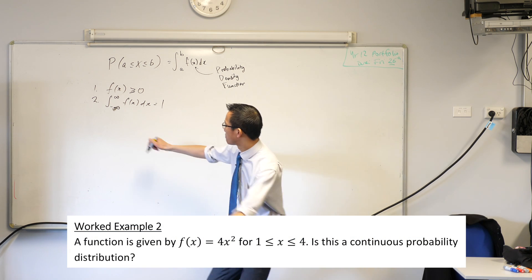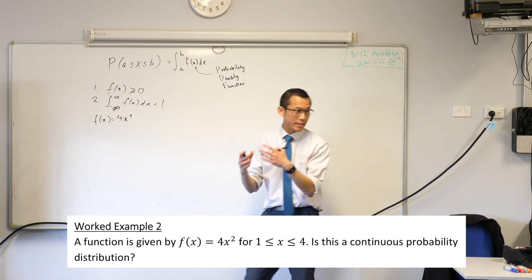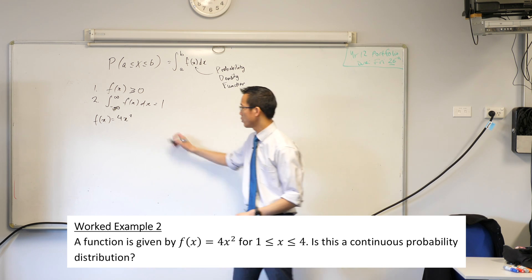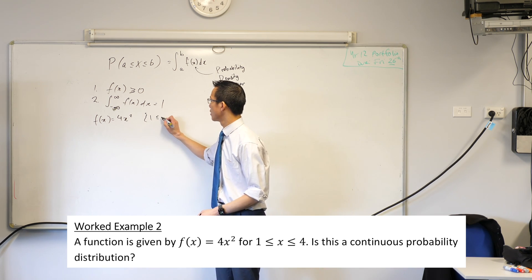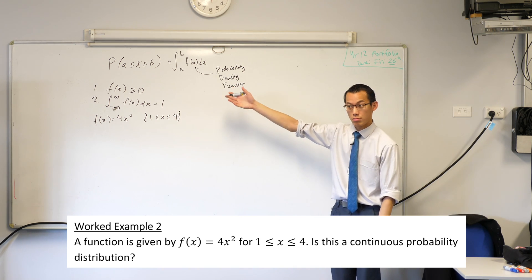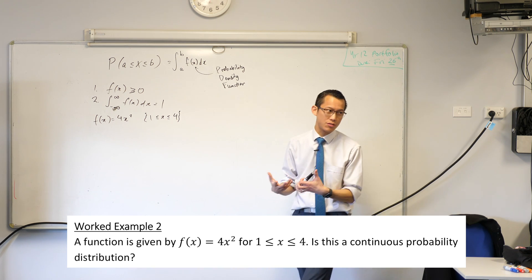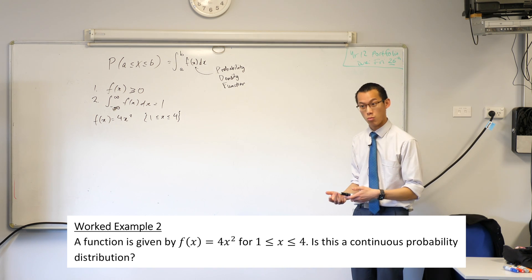Does f of x, f of x equals 4x squared and it's defined in a particular interval from 1 to 4, does it meet these two conditions? Now the question does say is it, but I'm actually interested in not just a yes-no answer, I want to know why.